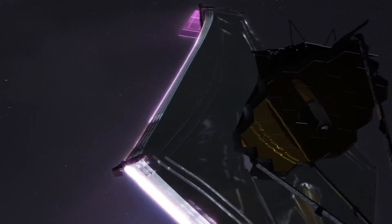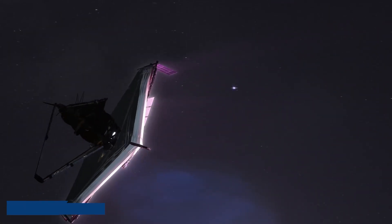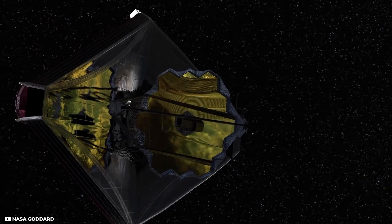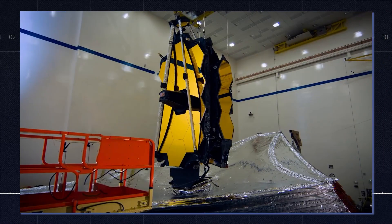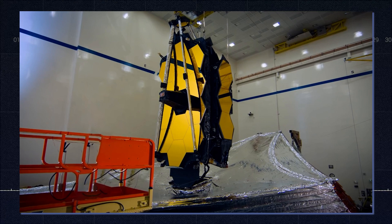The James Webb Space Telescope will be 930,000 kilometers from Earth in solar orbit, and will have a broader spectrum vision than its predecessor, Hubble.